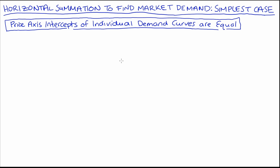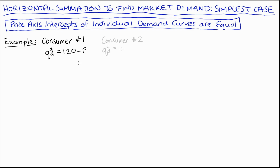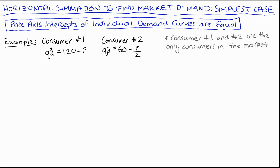I'm just going to do an example, and in my example we have two consumers. The equation QD1 is equal to 120 minus P — that will be consumer number one's demand function — and QD2 is equal to 60 minus P over 2, that's consumer 2's demand function.